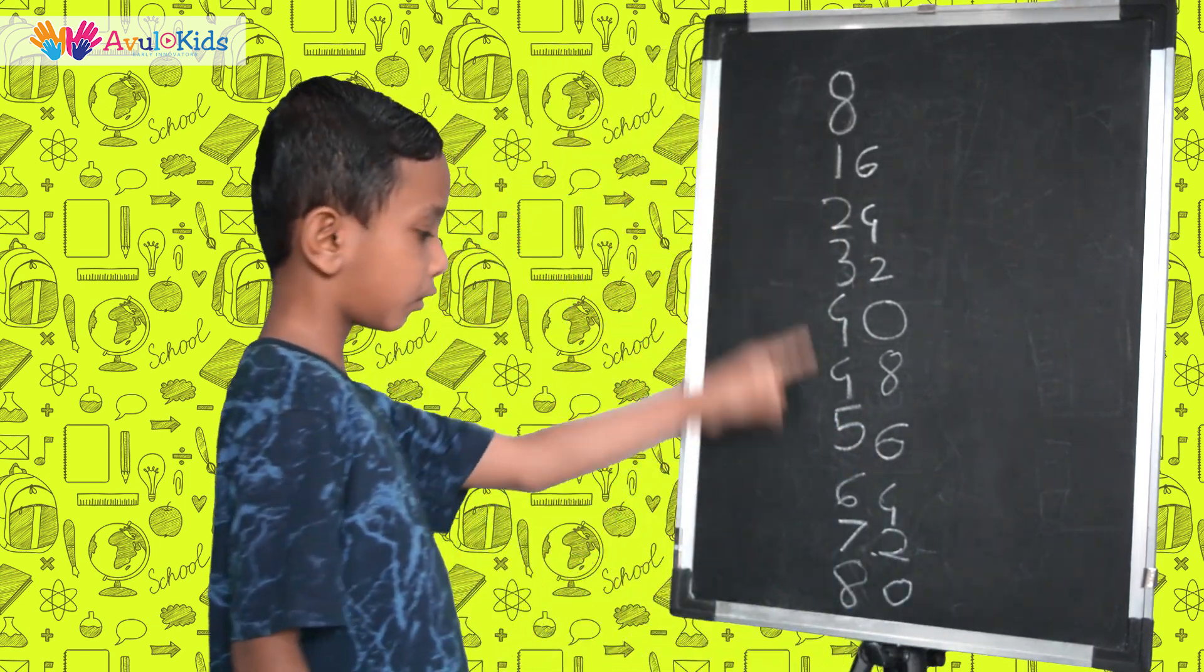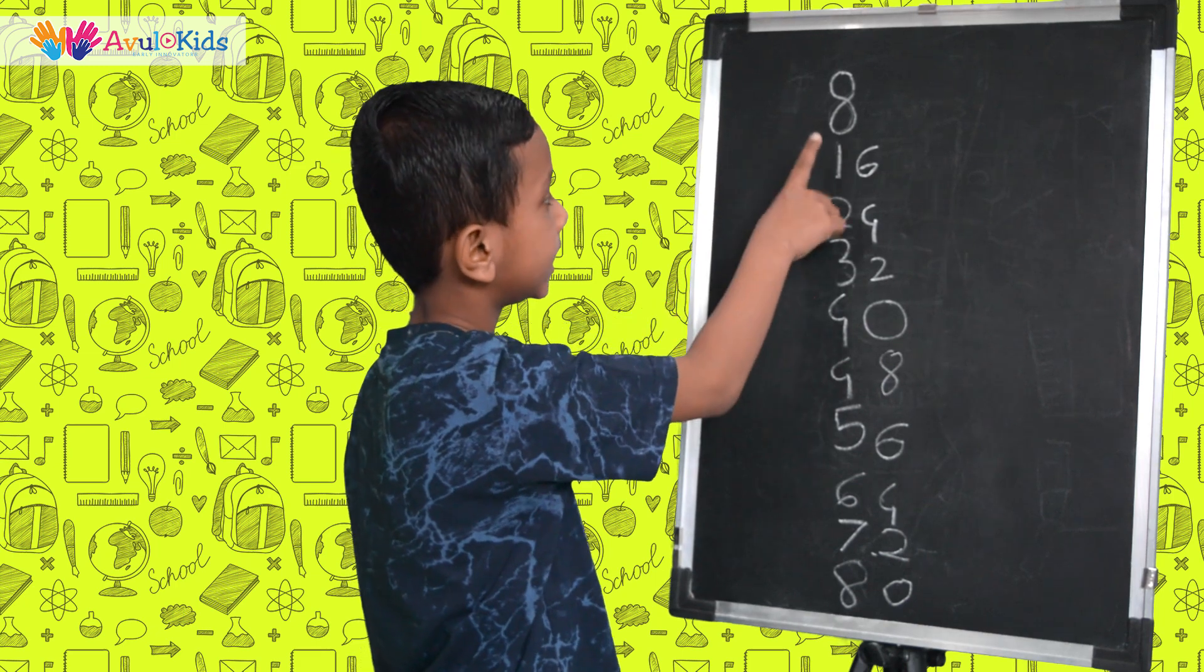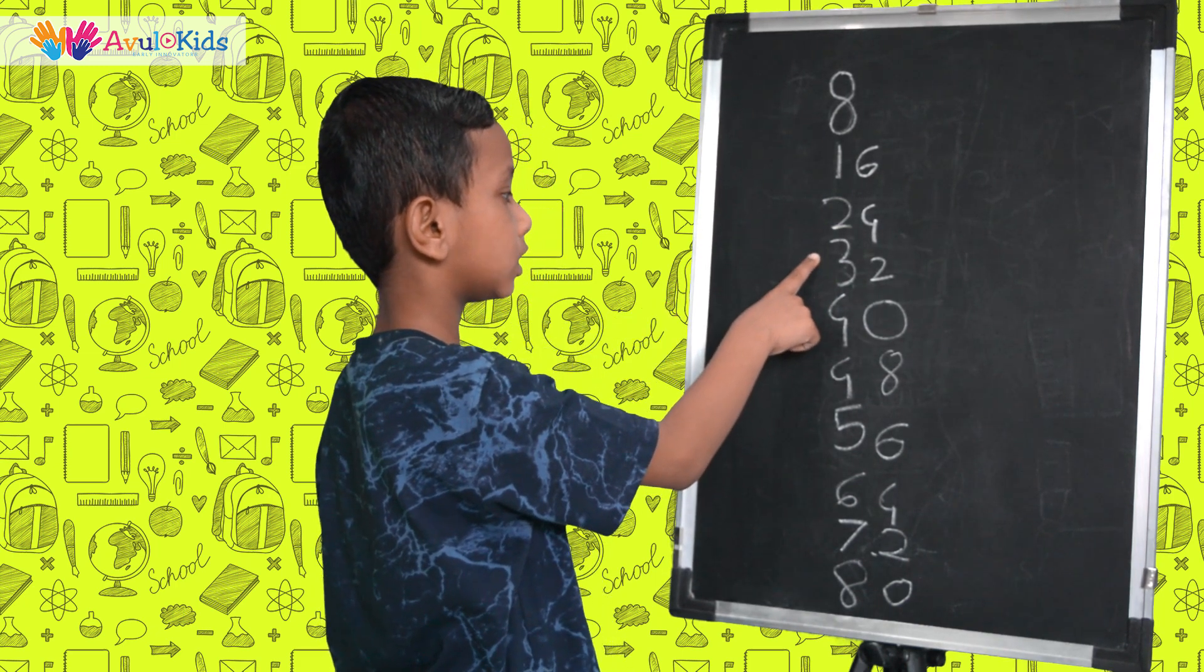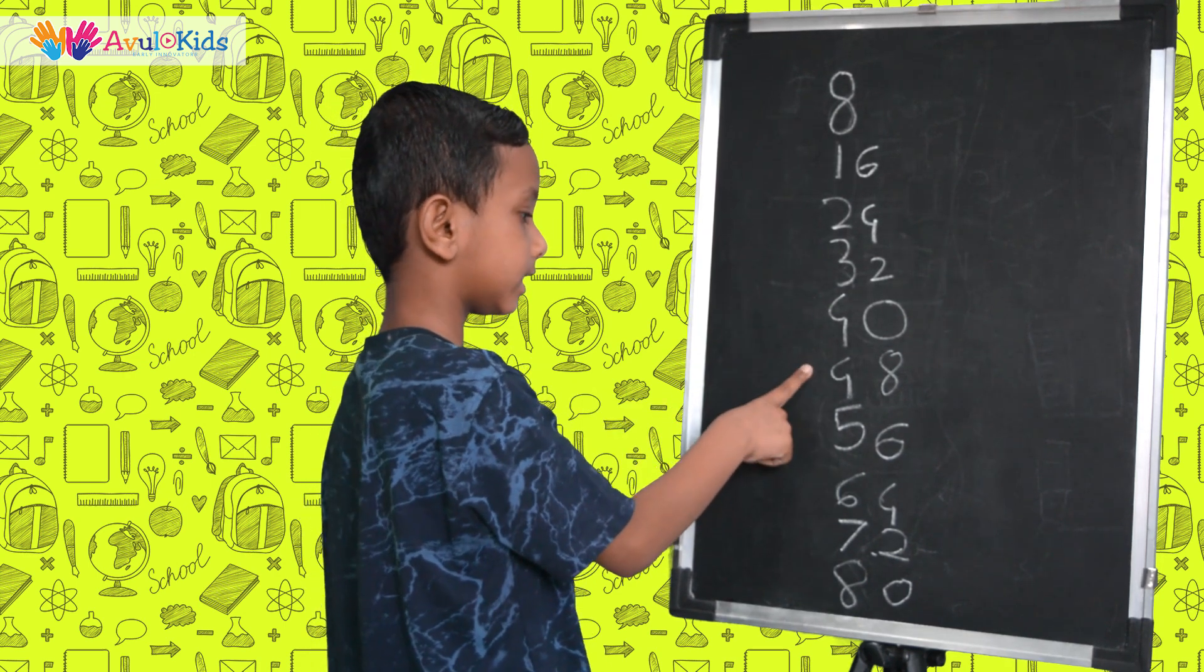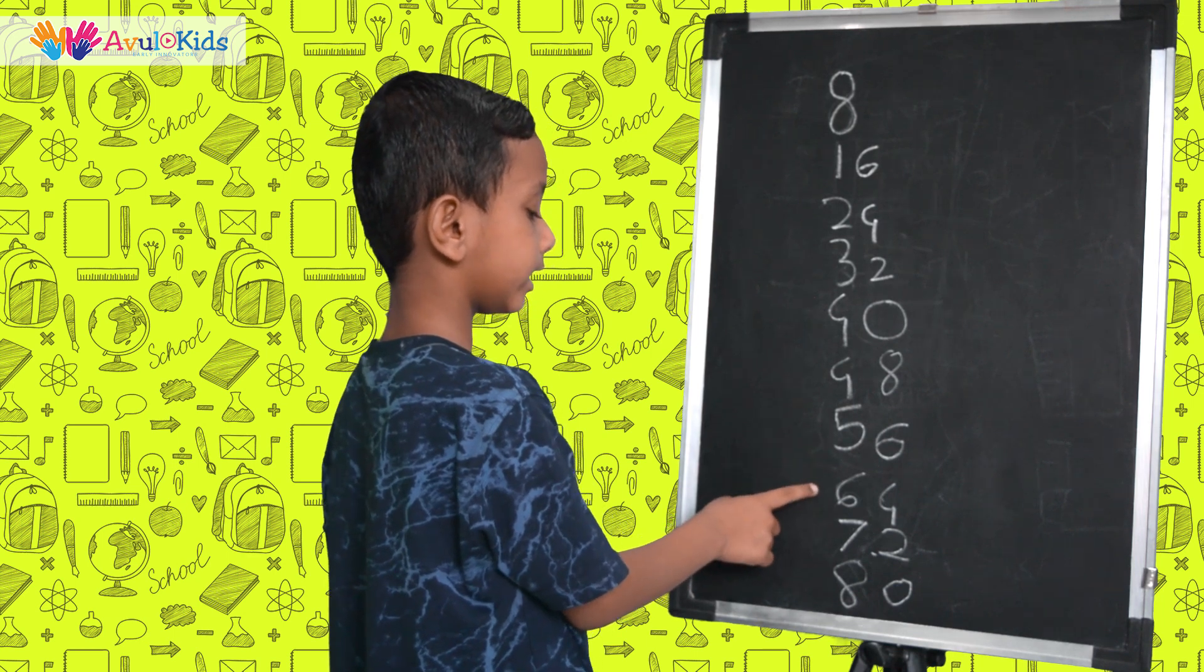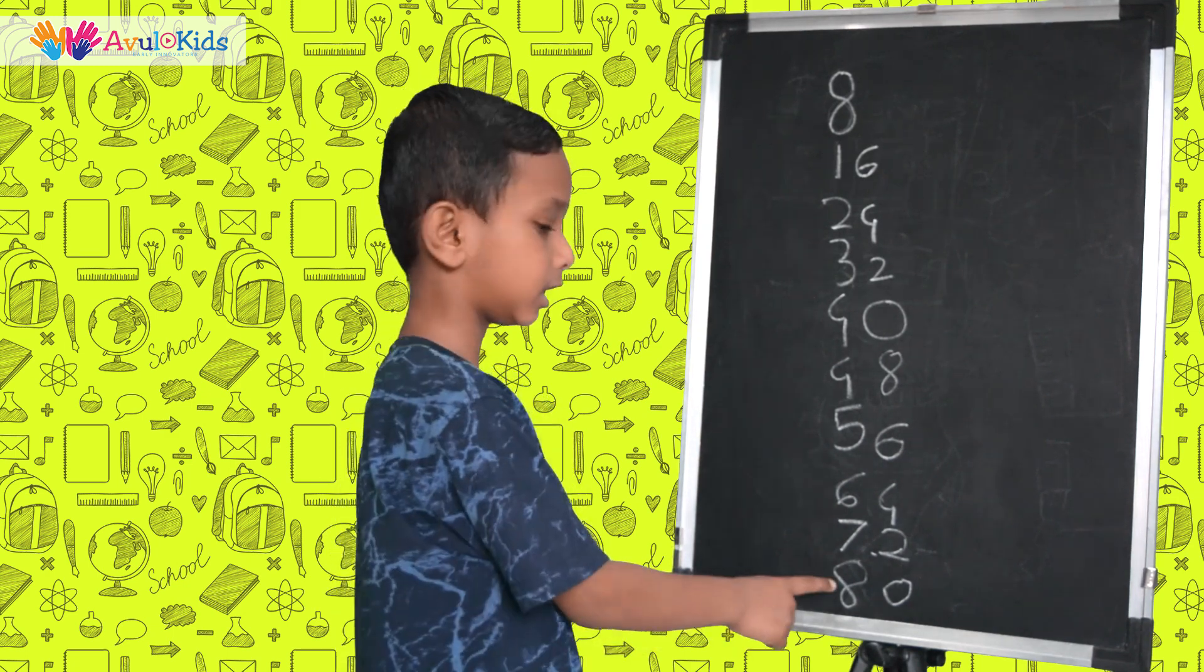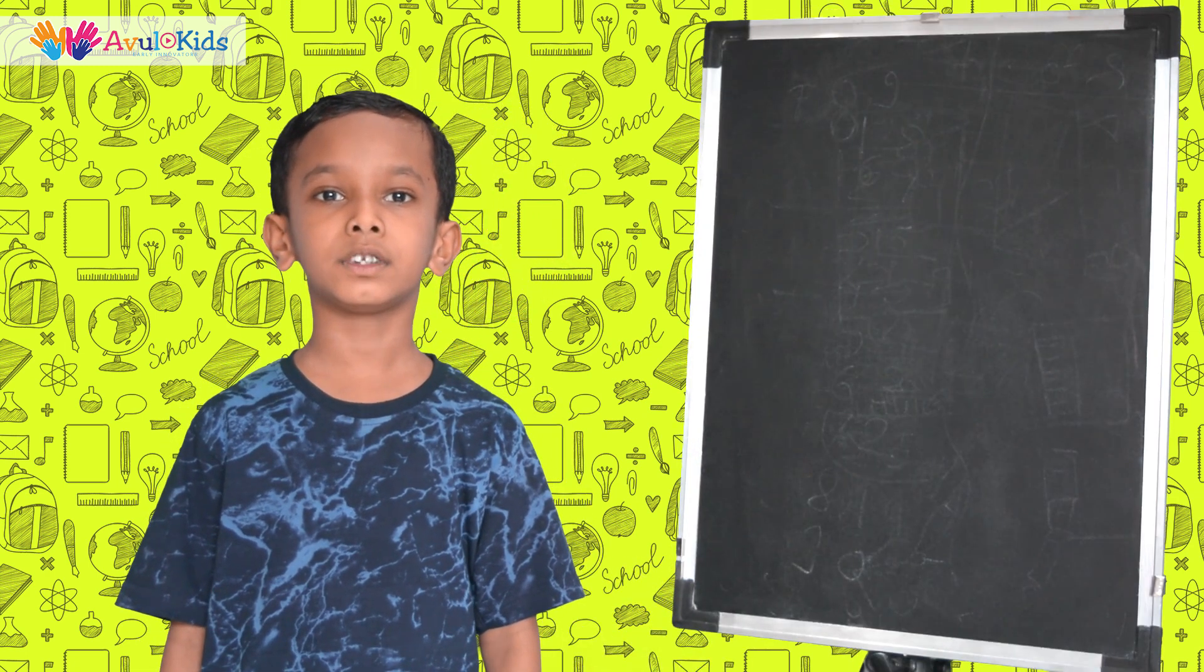Can you see the full table of 8? 8 ones are 8, 8 twos are 16, 8 threes are 24, 8 fours are 32, 8 fives are 40, 8 sixes are 48, 8 sevens are 56, 8 eights are 64, 8 nines are 72, 8 tens are 80. Now let us see the table of 9.